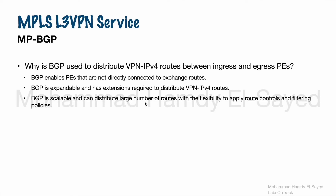In the service provider network, PEs can carry a huge number of customer routes and connect to a huge number of customer sites. BGP is suitable to distribute this large number of routes, with the flexibility to apply route controls and filtering policies. This is why BGP is used to distribute VPN IPv4 routes.